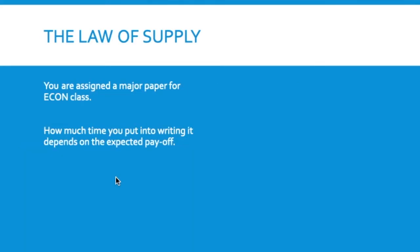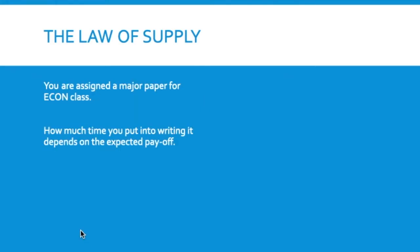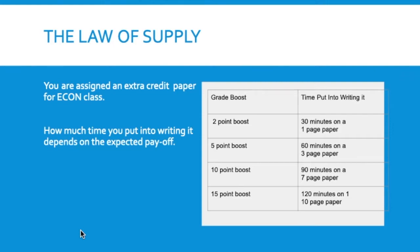One way to think about this — it can be confusing why price falling wouldn't make you produce more to make up profit per unit. Think about it this way: if I assign you an extra credit paper for econ class, how much time you put into writing it depends on the expected payoff. If I'm going to give you a two-point boost, you might only write a one-page paper that takes 30 minutes — that's your limited resource, your time and intellectual effort.